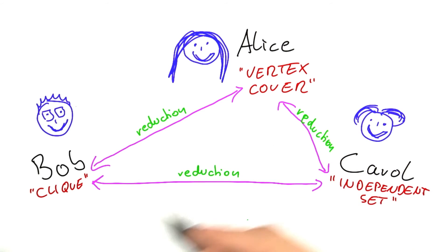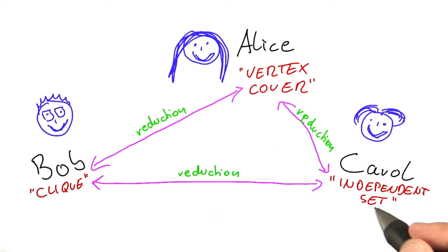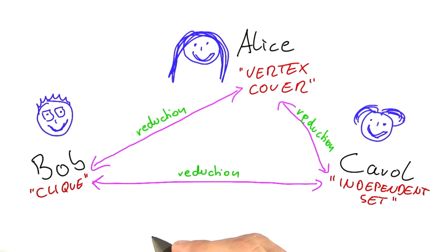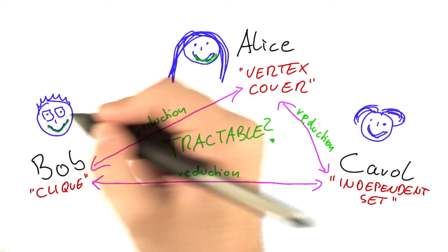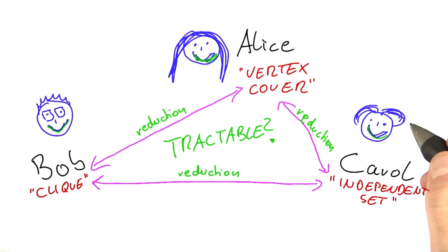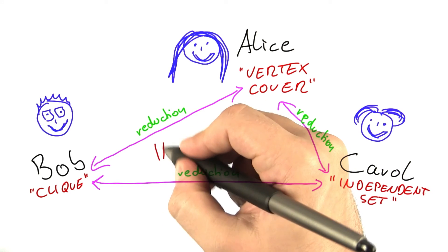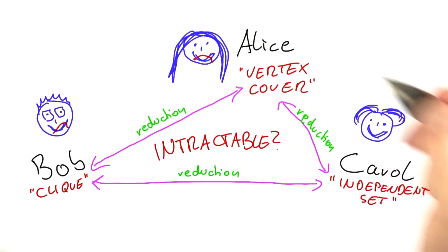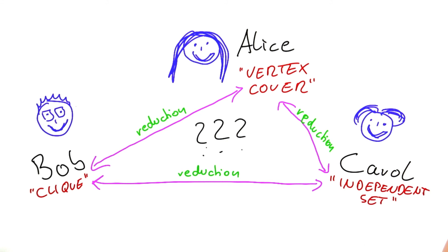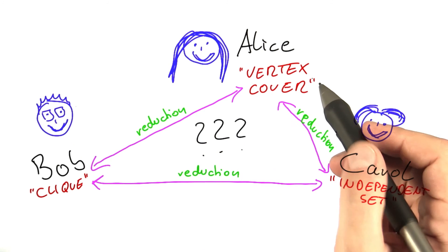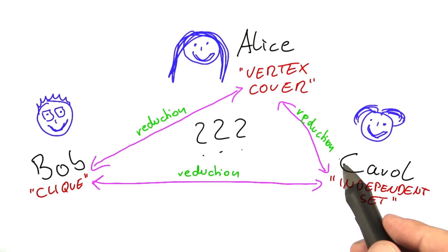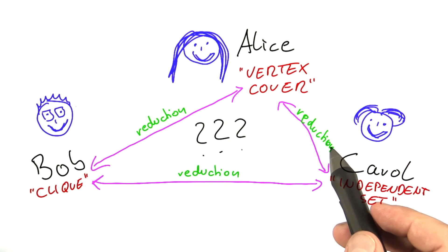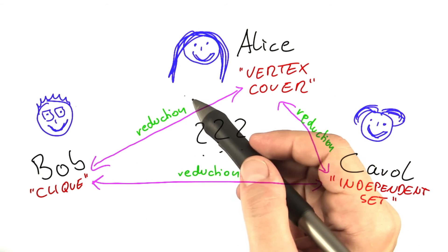So now the big question is: for clique, vertex cover, and independent set, are those three problems tractable — in which case Alice, Bob, and Carol would really keep smiling — or will it turn out that all of these problems are intractable, in which case Bob, Alice, and Carol would tend to be rather unhappy. So which one is it going to be? Are all three going to end up very happy? Are all three going to end up very sad? Or is there maybe something in between?